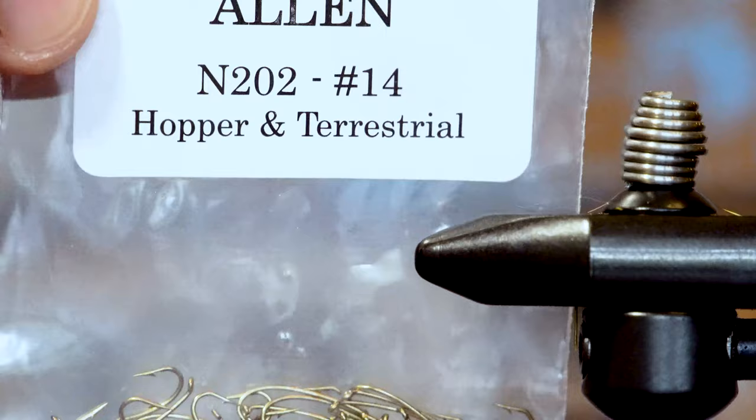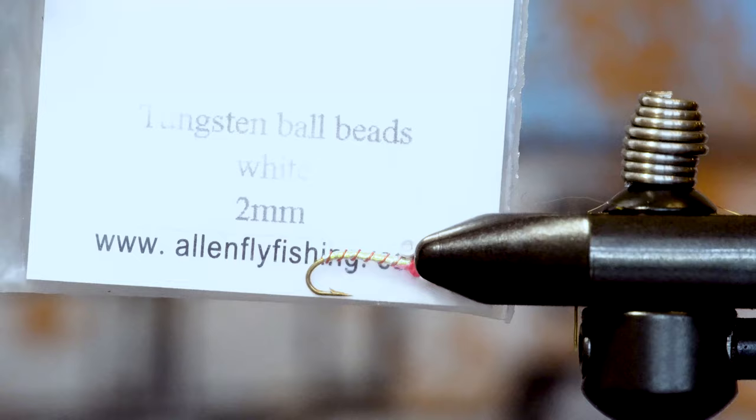We'll be tying this pattern on the N202 hook, which gives a nice long body to the fly, and using a white tungsten ball bead.